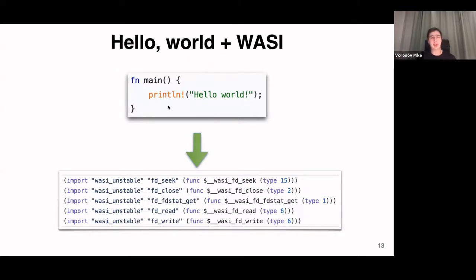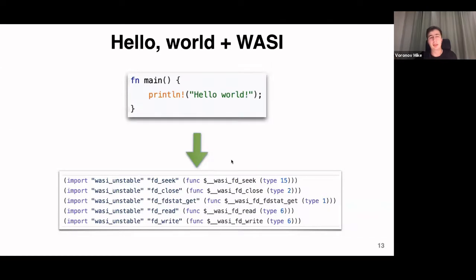Consider a simple example that just prints Hello World to the system console. If you compile this with the wasm32-wasi target and disassemble it to view the import section, there will be about five imports providing capability to write to the console or to a file. WASI is good here because it provides a standard way to import from different languages — for example, if you write similar code in C++ using printf or cout, the imports should be the same.